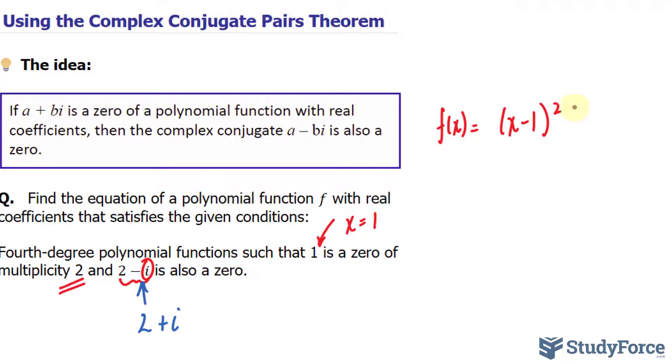So we would write down in factored form, x minus bracket two plus i. That represents this one. And another factor being x minus bracket two minus i.